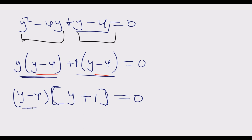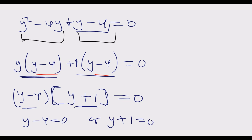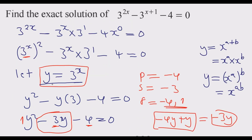We see that y minus 4 equals 0, or y plus 1 equals 0. Solving for y: in the first case y equals 4, because negative 4 crossing the equal sign becomes positive. In the second case y equals negative 1, because positive 1 crossing the equal sign becomes negative. So we have the values of y.